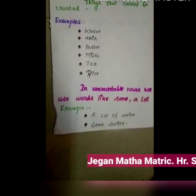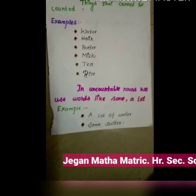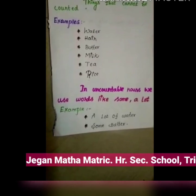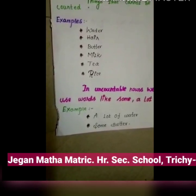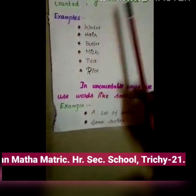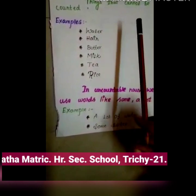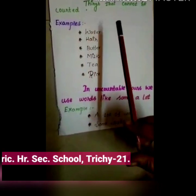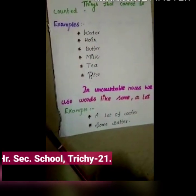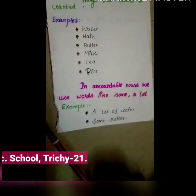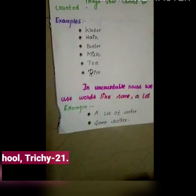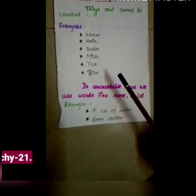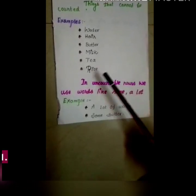We cannot count one water, two water, one butter, two butter. We use 'some' or 'a lot of.' For example: a lot of water, some butter. Things which we cannot count, we call uncountable. Can you give me some examples? Water, hair, butter, milk, tea, rice — like that.